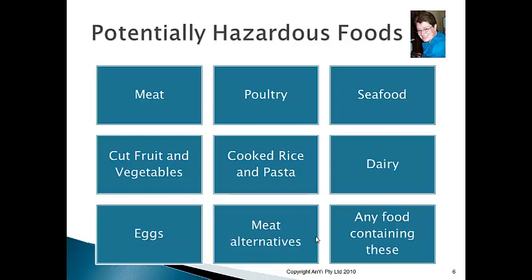To summarise: meat is anything that lived on land; poultry is anything with wings — it doesn't have to fly; and seafood is anything that lived in water. These distinctions matter because different bacteria prefer different environments, and we separate them out based on where they live and their characteristics.